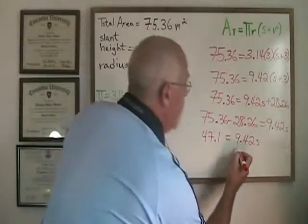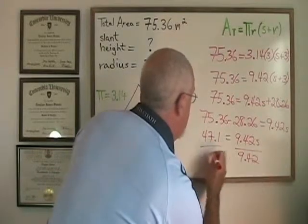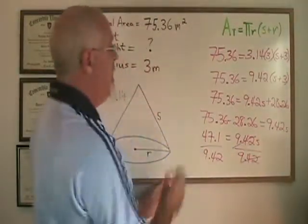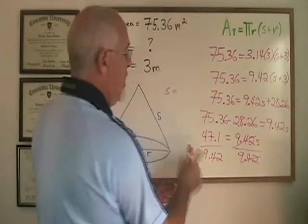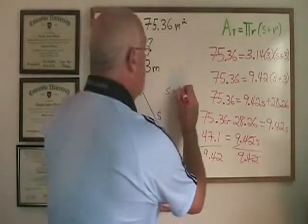And now if I divide both sides by 9.42, these cancel. My s is isolated and is equal to 47.1 divided by 9.42, which is 5.